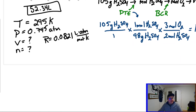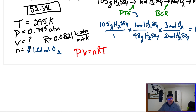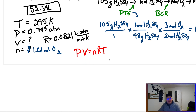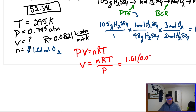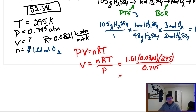Now that we know our number of moles is 1.61, let's plug into the ideal gas law: PV = nRT. Pressure is 0.745 atmospheres. Let's isolate volume first, just like we practiced in class. Plugging in: n = 1.61, R = 0.0821, T = 295, all over P = 0.745. We get a final answer of 52.34 liters of oxygen.